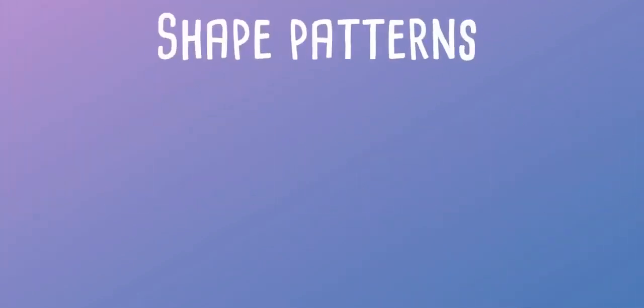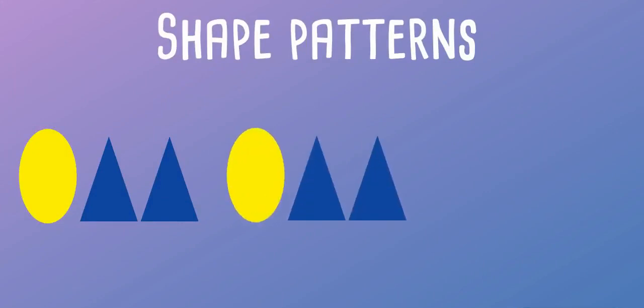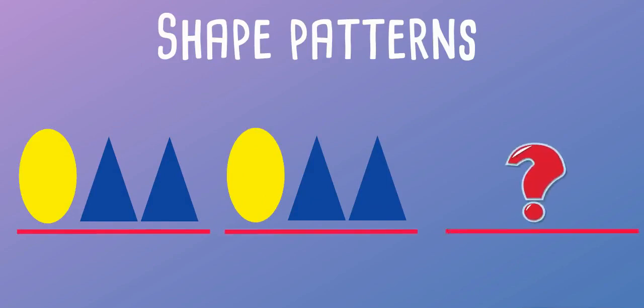We have another example. The repeating part of the pattern is an oval followed by two triangles. To extend this pattern, we add one oval shape and two triangles.